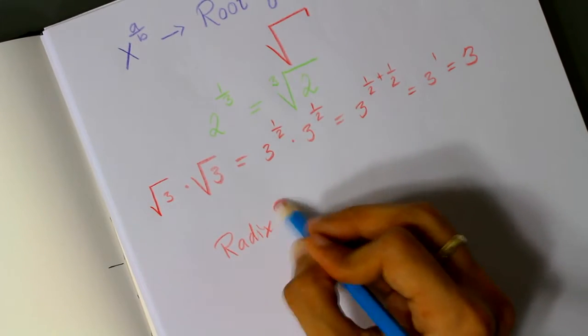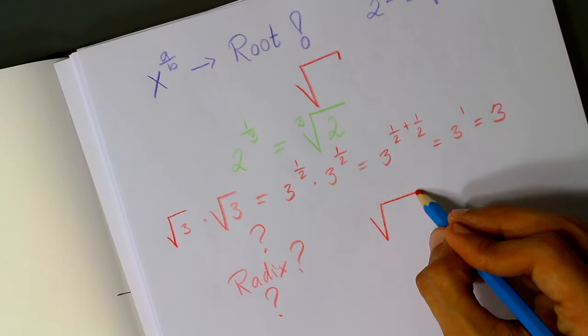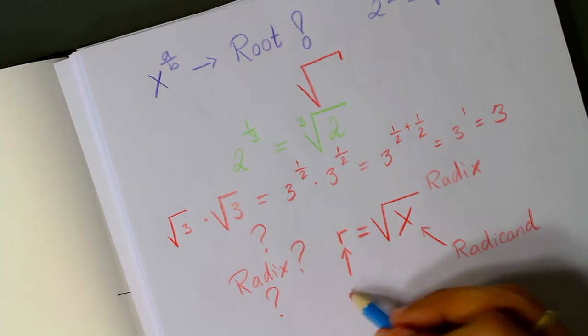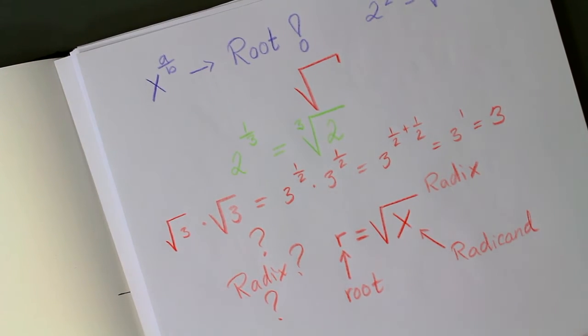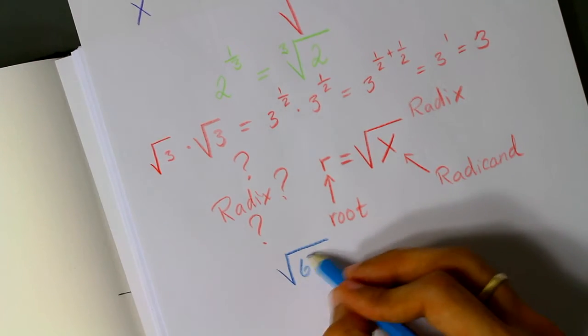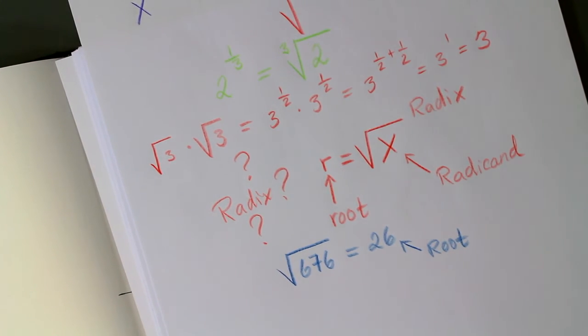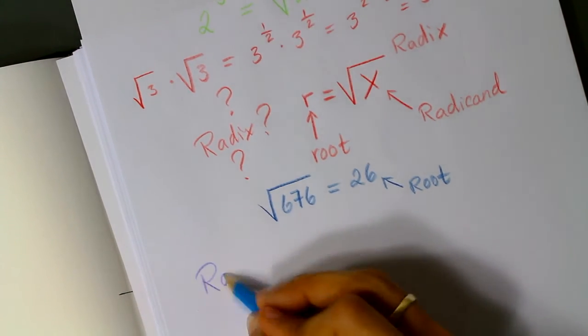Oh yes, what's a radix, you may wonder? This is a radix, and the value that sits beneath it is called the radicand, and the number it equals to is called the root. So, for instance, the square root of 676 is 26. Also, what's commonly called a radical is an equation in which the root has not been determined yet.